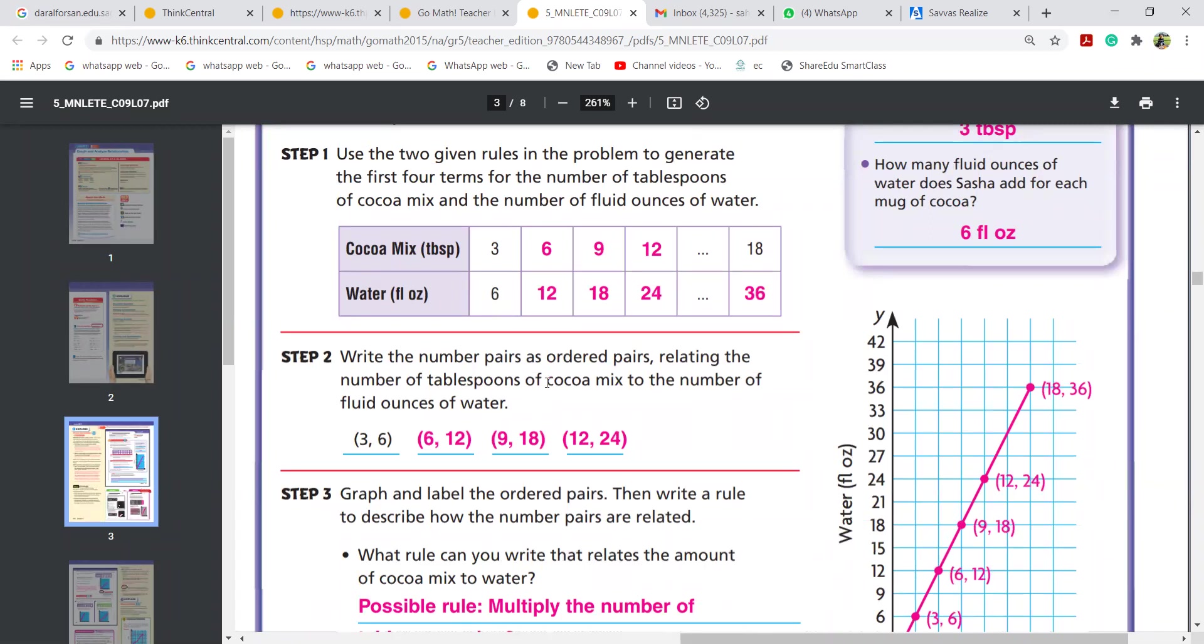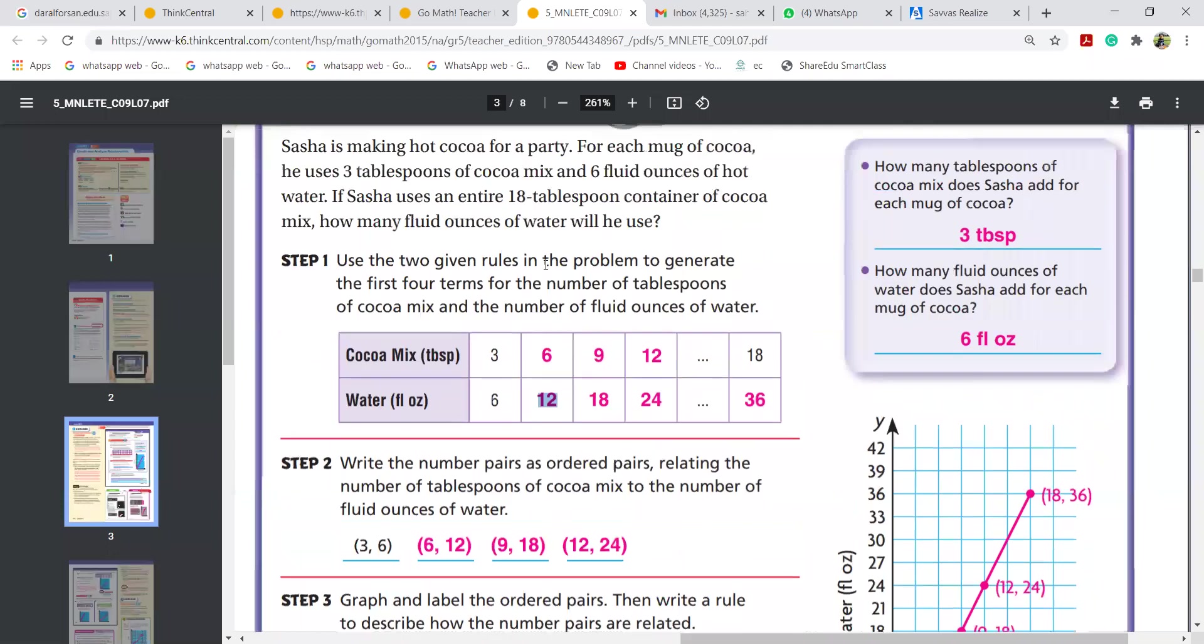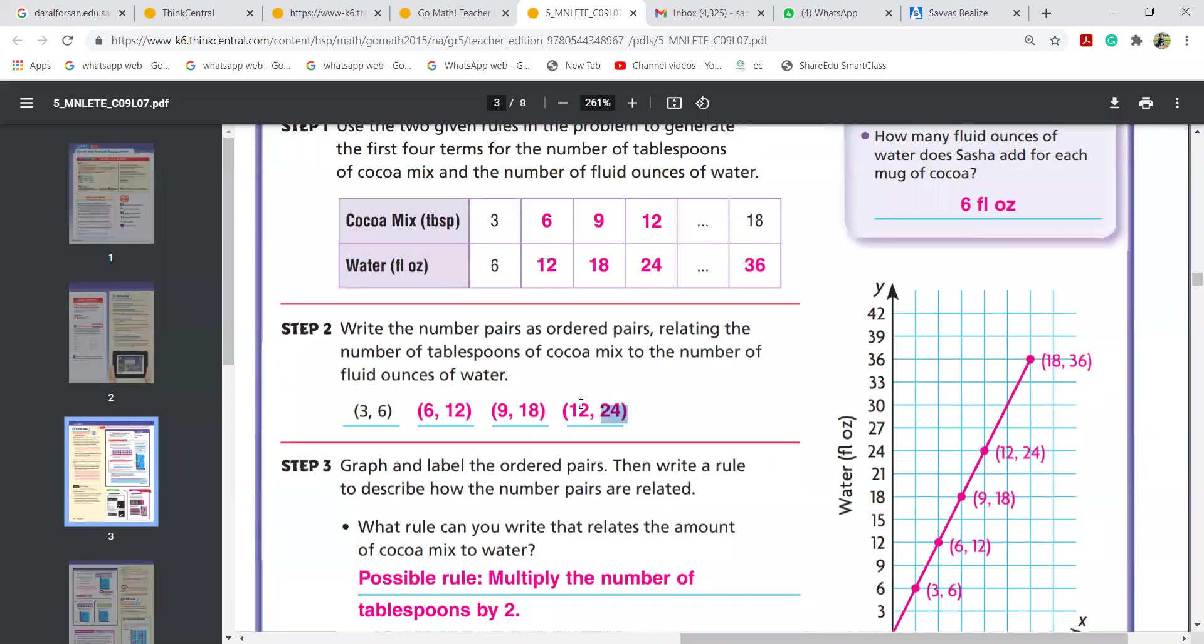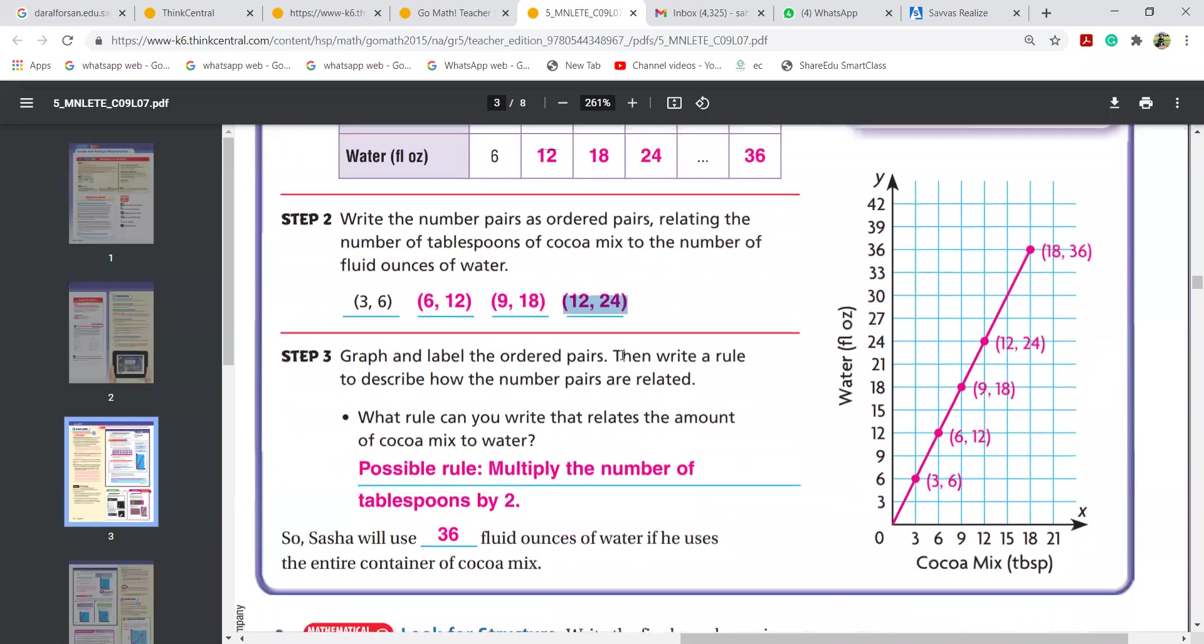Now let's write the ordered pairs. Like we always write the ordered pair in parentheses. When it is three tablespoons, you take six ounces of water. If you have six tablespoons, take 12 ounces of water. They are pairs. Twelve comma 24, like this. Amal, are you looking here?